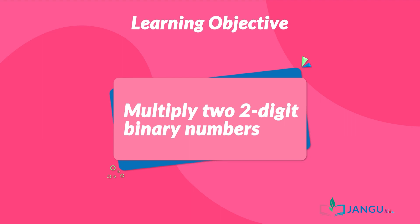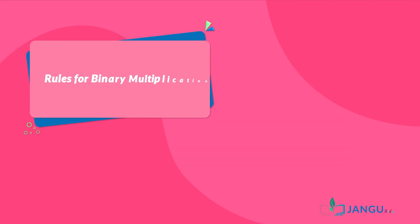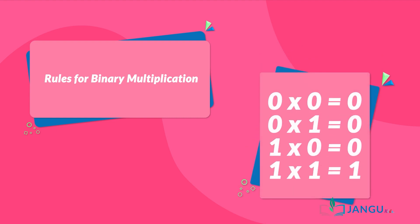Then let's begin. Do you know that multiplication of the digits zero and one work the same in the base 10 and base 2 number systems? Yes, the only difference is the rules for multiplying binary numbers are different from those in base 10. They are: zero times zero is equal to zero, zero times one is equal to zero.